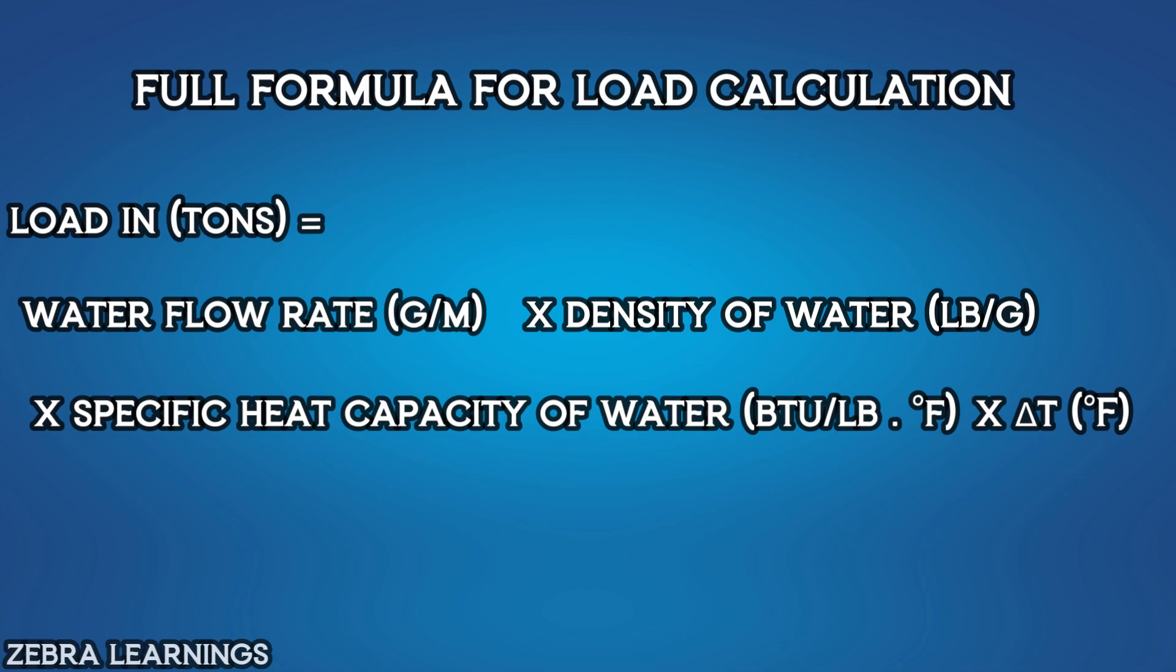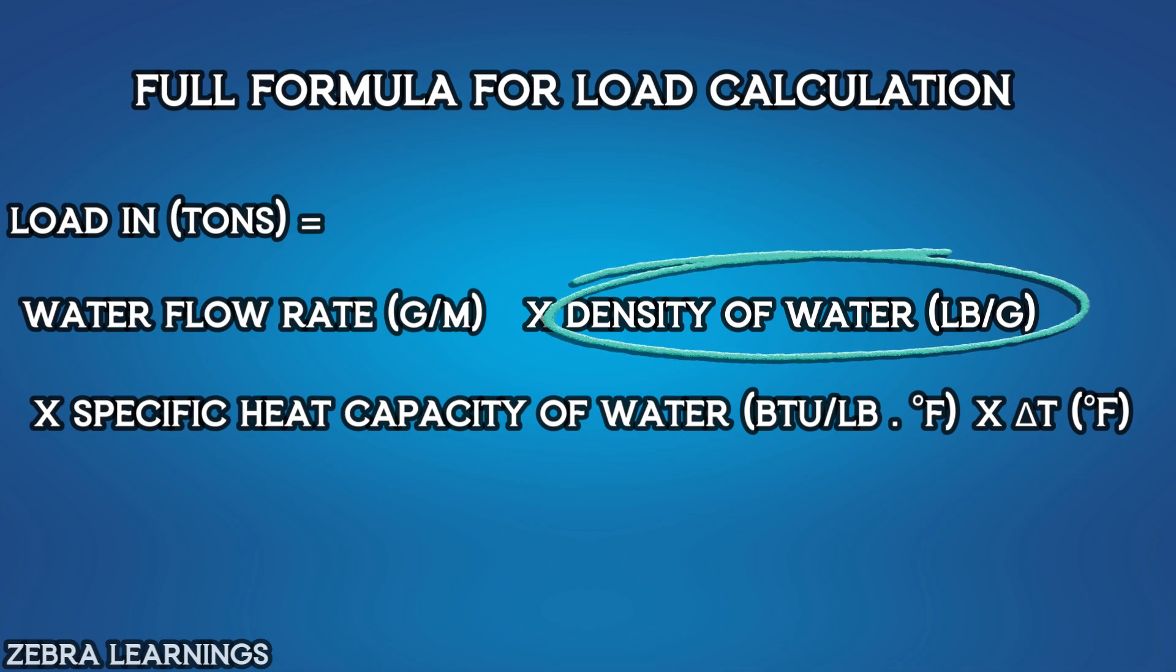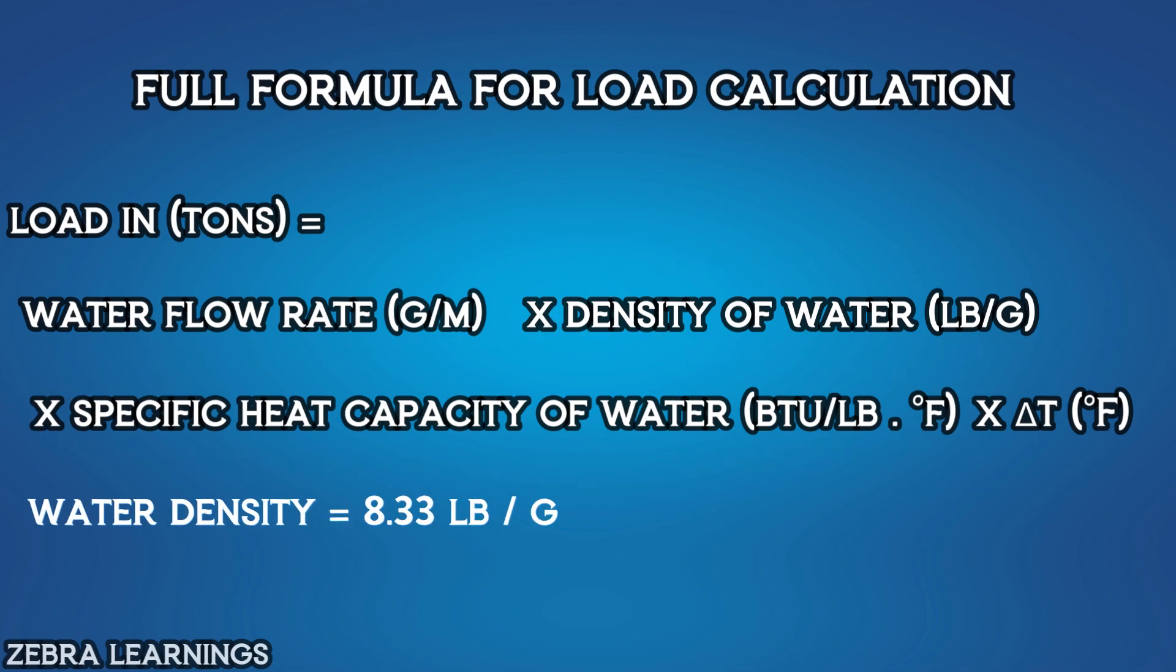Now let's simplify this formula. In this formula, we already know the values for water density and water specific heat capacity. Water density is 8.33 pounds per gallon, and water specific heat capacity is 1 BTU per pound degree Fahrenheit.